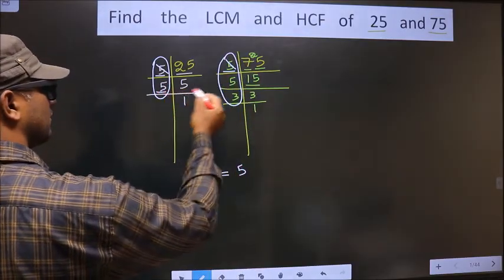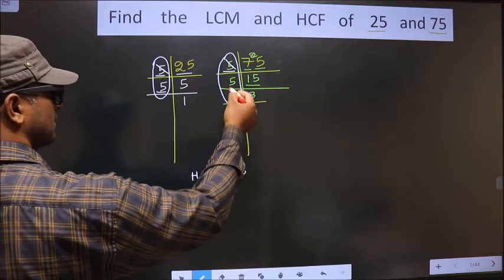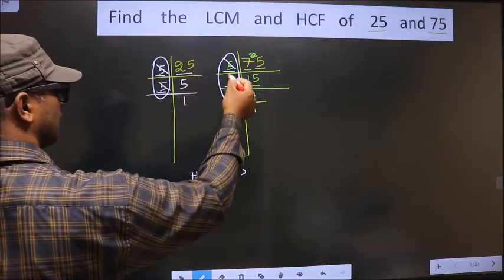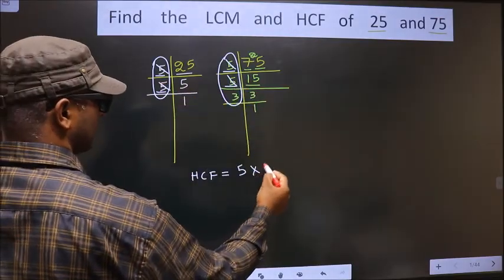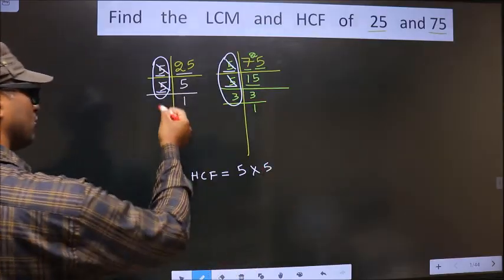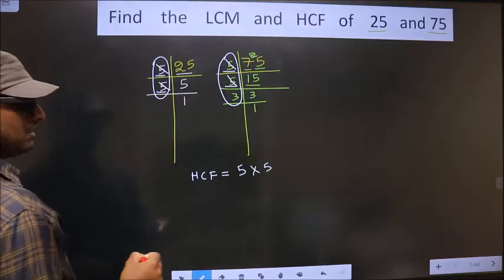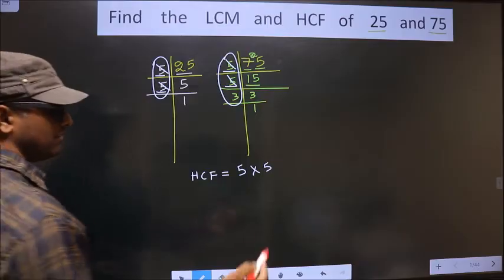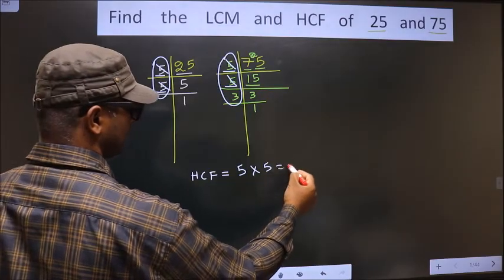Next number is 5. Do we have 5 here? Yes. So you cut 5 and write here. No more numbers are left. Therefore our HCF is 5 into 5, that is 25.